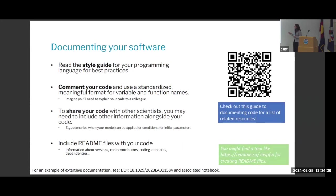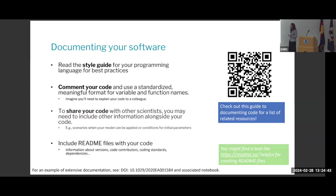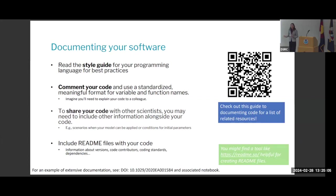Documenting your software well is important. Good practices include commenting your code as you write it — not all at the end — using a standardized format for variable and function names, and imagining you'll need to explain your code to a colleague who hasn't been with you every step of the way. If you're sharing your code with other scientists, include information about scenarios when your model can or can't be applied and conditions for initial parameters. Include readme files, and follow resources from Johns Hopkins on documenting code.